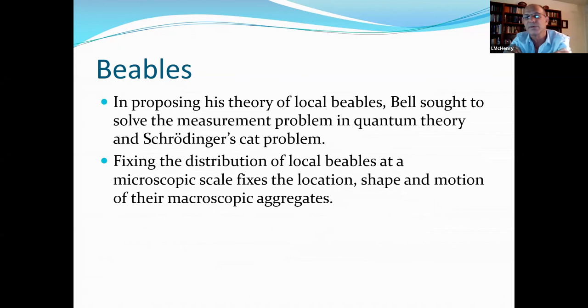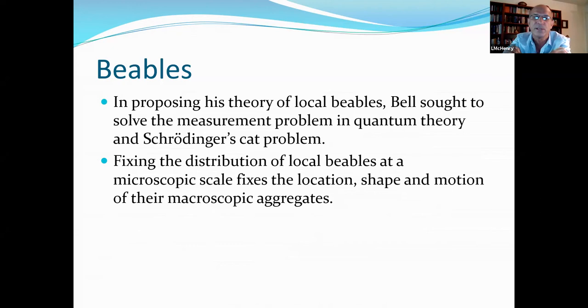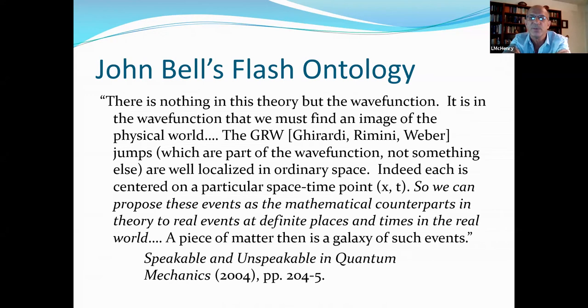So when proposing his theory of local beables, Bell sought to solve the measurement problem in quantum theory and Schrodinger's cat problem, fixing the distribution of local beables at a microscopic scale fixes the location, shape, and motion of their macroscopic aggregates. Once again, quoting from Bell, there is nothing in this theory but the wave function. It is in the wave function that we must find an image of the physical world. The GRW jumps, which are part of the wave function, not something else, are well localized in ordinary space. Indeed, each is centered on a particular space-time point, X,T. So we can propose these events as the mathematical counterpoints, in theory, to real events at definite places and times in the real world. A piece of matter, then, is a galaxy of such events.